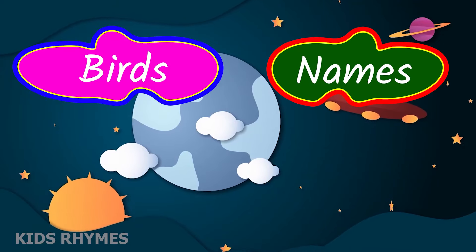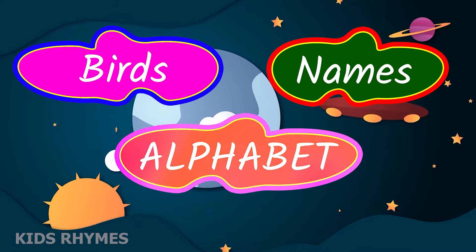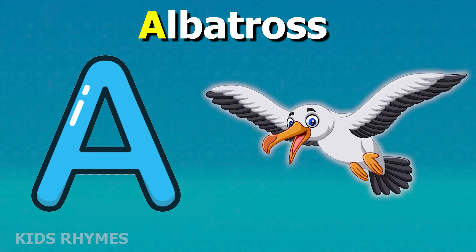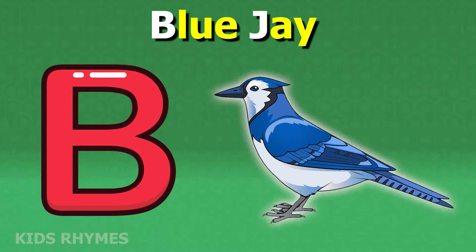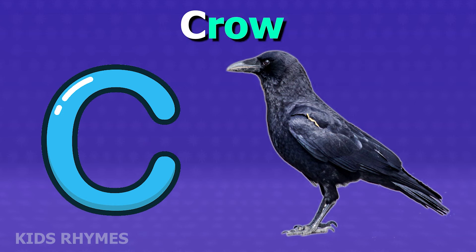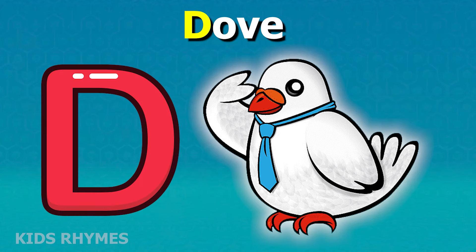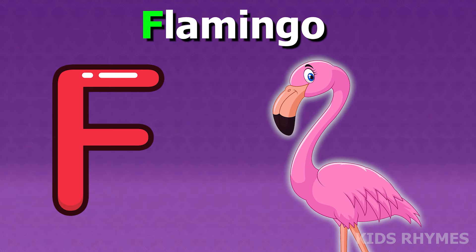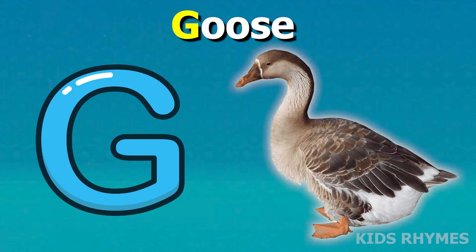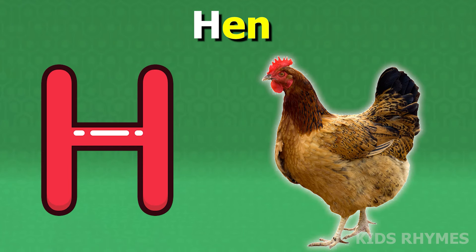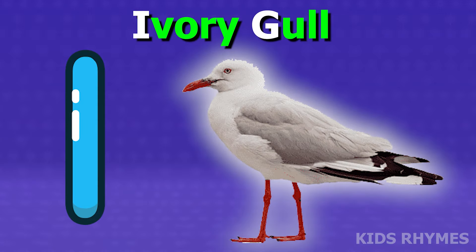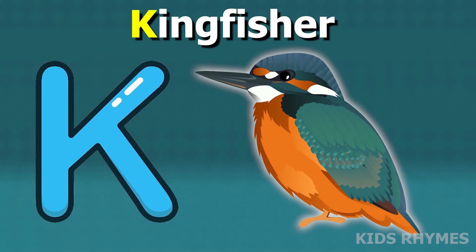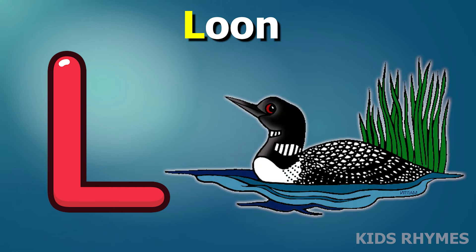Bird's name according to alphabet: A for Albatross, B for Blue Jay, C for Crow, D for Dove, E for Eagle, F for Flamingo, G for Goose, H for Hen, I for Ivagel, J for Jay, K for Kingfisher, L for Loon.